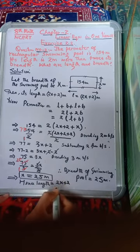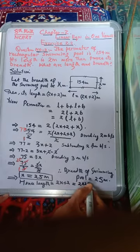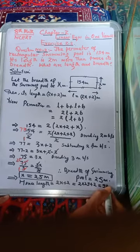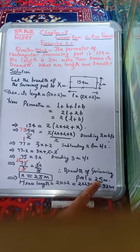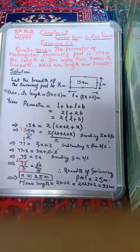Length equals 2x plus 2, means 2 into 25 plus 2, means 50 plus 2 is equal to 52 meters. We can check: breadth is 25 meters and length is 52 meters, which is 2 meters more than twice the breadth (2×25+2=52). So this is how we can solve question number 2.